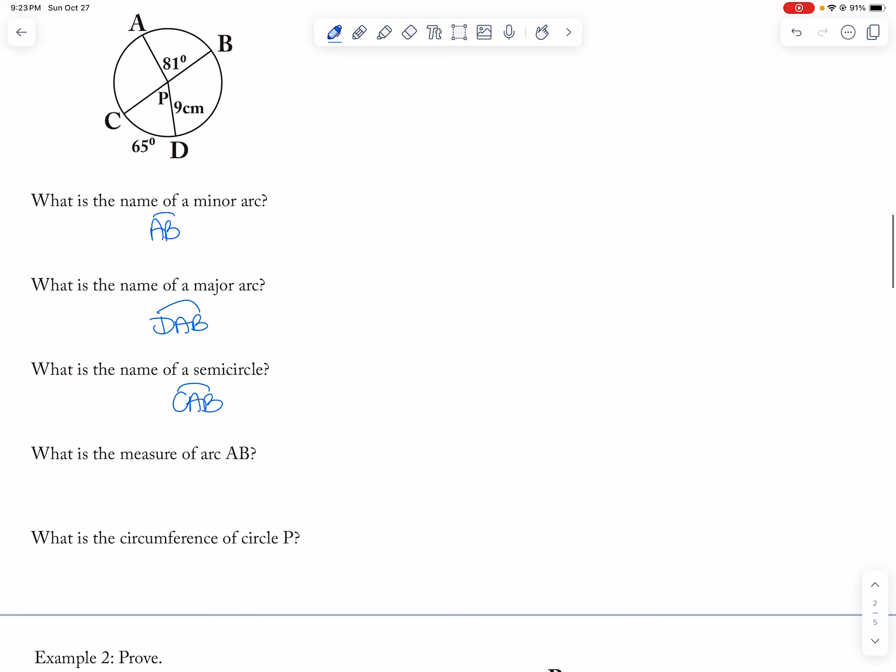What is the measure of arc AB? And that is 81. It's the same measurement as the measurement of the central angle. And then the circumference is 2 pi R, or pi times the diameter.